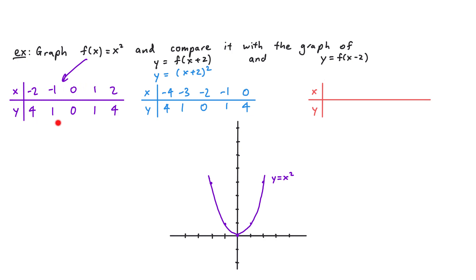Comparing this blue table with the original purple table, all of the x values are decreased by 2. The original x values were -2, -1, 0, 1, 2; now they are -4, -3, -2, -1, 0. Plotting (-4,4), (-3,1), (-2,0), (-1,1), (0,4) and connecting them gives the graph of y = (x + 2)². The blue graph is our original purple graph moved to the left 2 units — we call this a shift left 2 units.